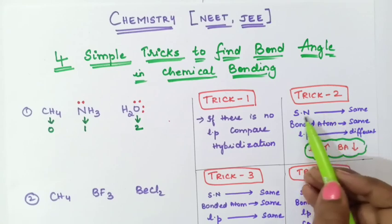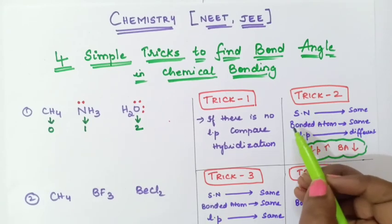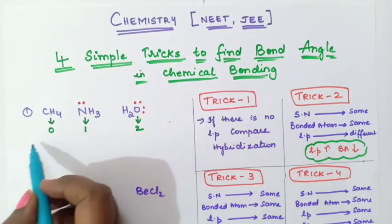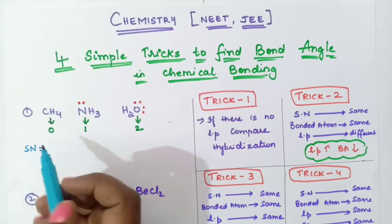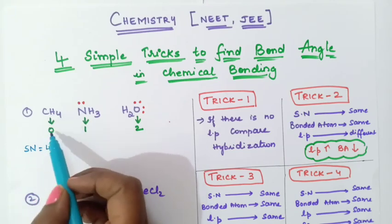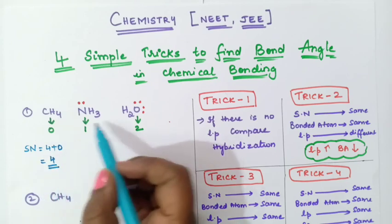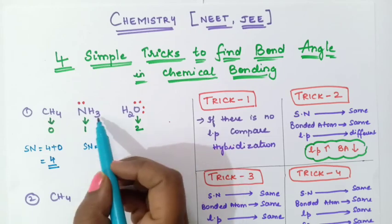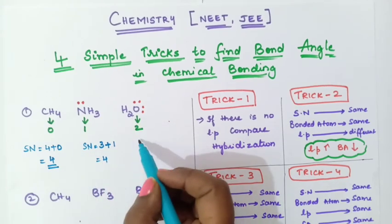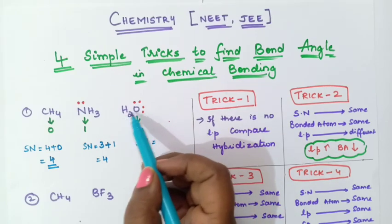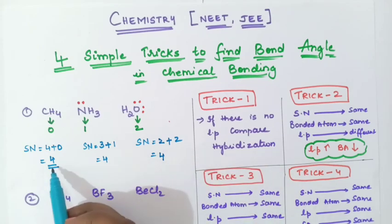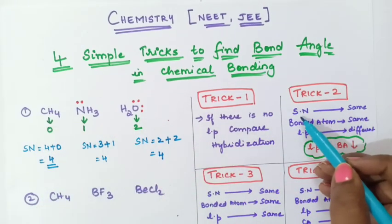Now we check the steric number. Steric number equals number of bonded atoms plus lone pairs. For CH₄: 4 bonded atoms + 0 lone pairs = 4. For NH₃: 3 bonded atoms + 1 lone pair = 4. For H₂O: 2 bonded atoms + 2 lone pairs = 4. So the steric number is the same (4) for all three molecules.